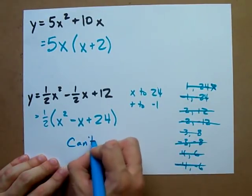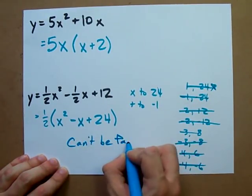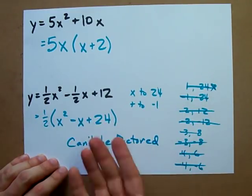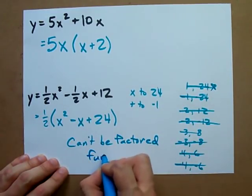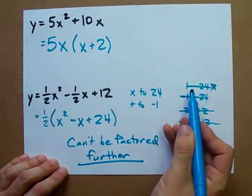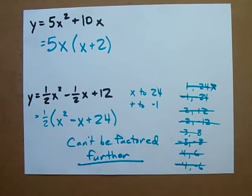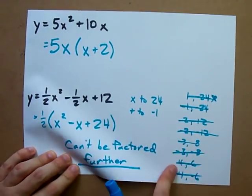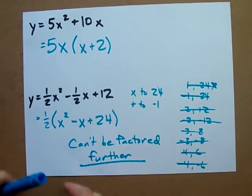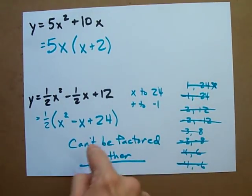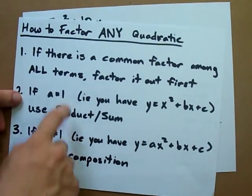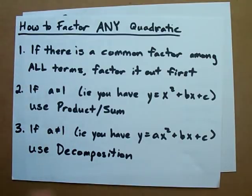This can't be factored further, and you've got to be on the lookout for that because sometimes you just can't factor things. But before you write a bold statement like can't be factored further, you should probably run through all the possibilities like I did. These are all the pairs of numbers that multiply to 24, and not a single pair adds to negative 1. That means you can't factor it further. Three-step process. Follow it. Be able to factor anything you want.